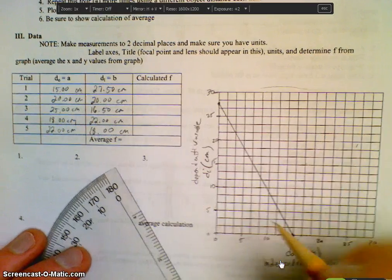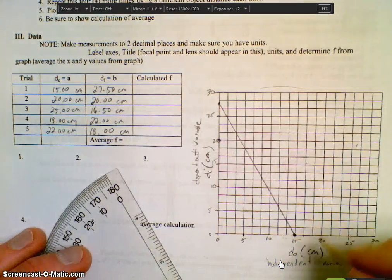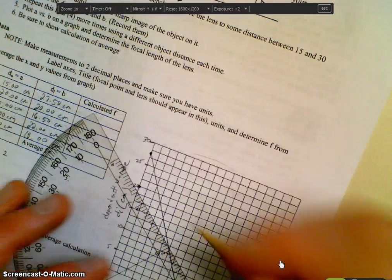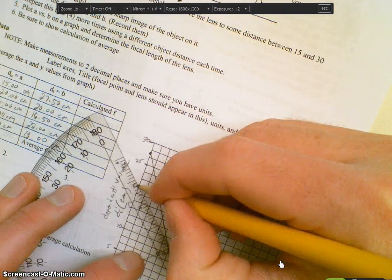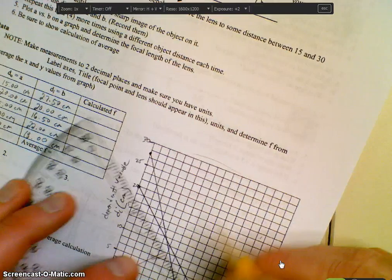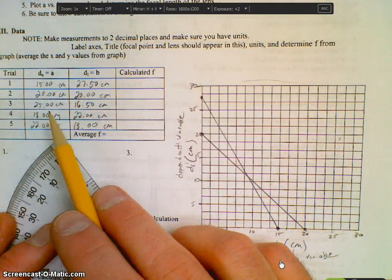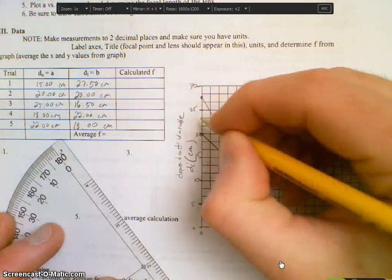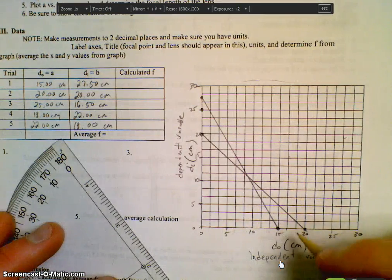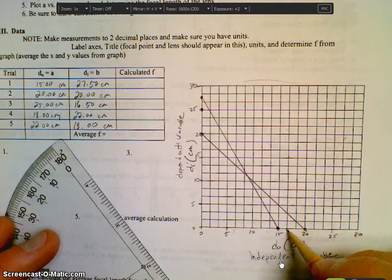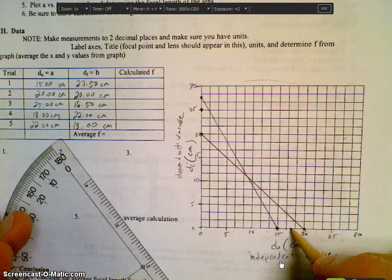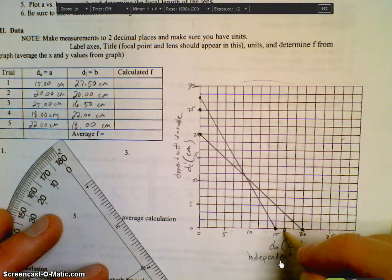So that's our first one. The next one is 20 and 20. And then the third one is a DO of 25 and 16 and a half. So 25 here, 16 and a half would be, well, this would be 17 and a half. So basically right here.